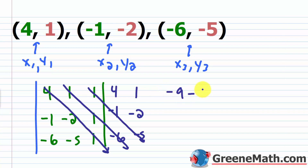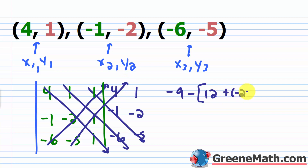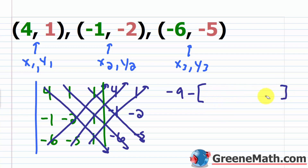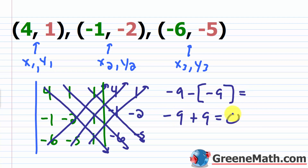That's −9 for the downward part. Now subtract the upward diagonals: (−6) × (−2) × 1 = 12; (−5) × 1 × 4 = −20; and 1 × (−1) × 1 = −1. So 12 + (−20) + (−1) = −9. We have minus a negative 9, which is plus 9. So −9 − (−9) = −9 + 9 = 0. Because this is 0, those three points lie on the same line — they are collinear.